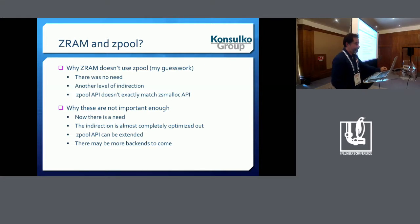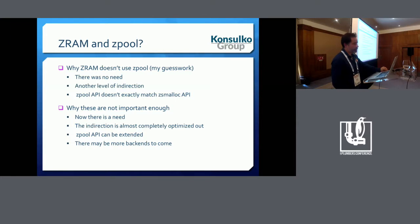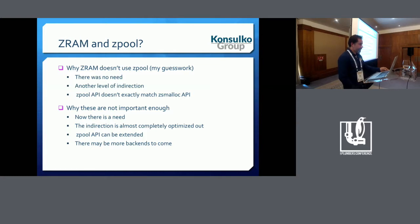Why doesn't ZRAM use zpool? Honestly I don't know, but I can imagine the following reasons. First, there was no need — before z3fold came in, there wasn't a real need for ZRAM to use something other than zsmalloc. Another possible reason is that we don't want to introduce a level of indirection and prefer to use a certain API directly. A third possible reason is that the zpool API does not exactly match the zsmalloc API.